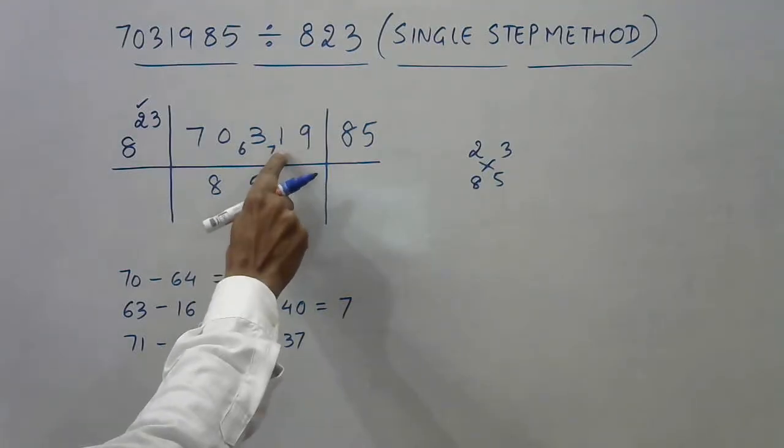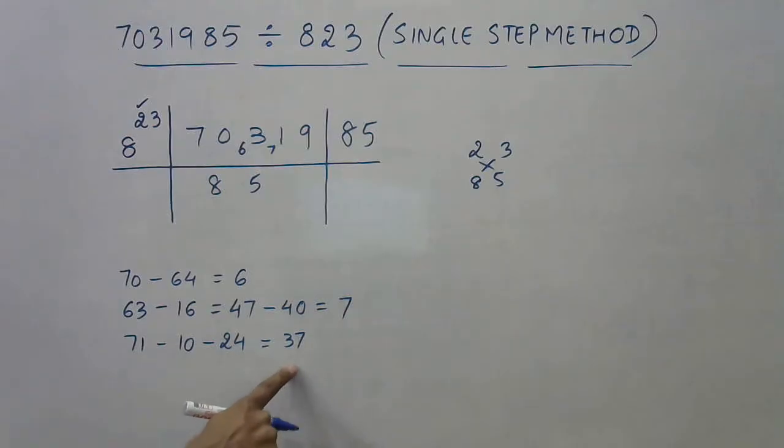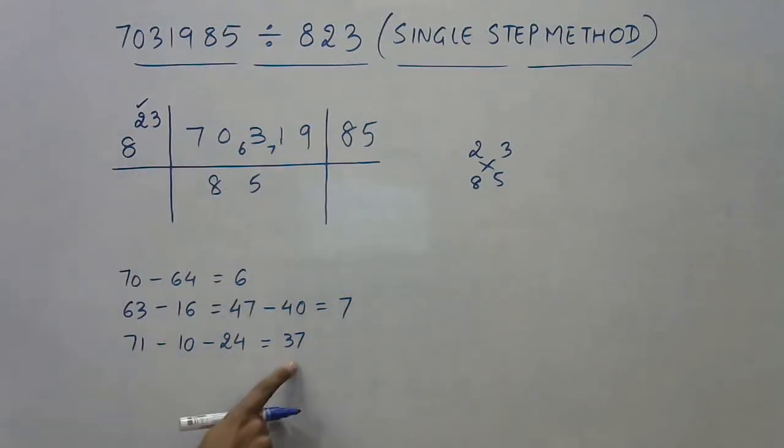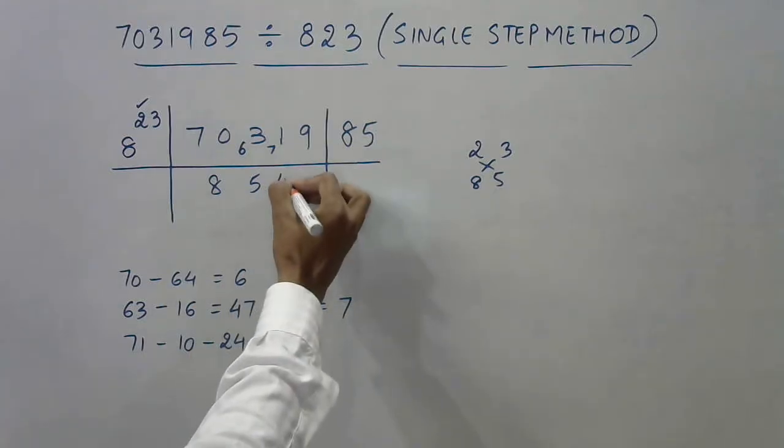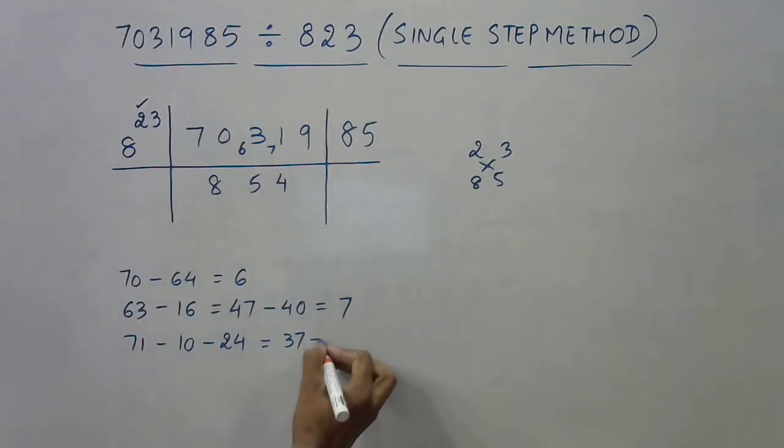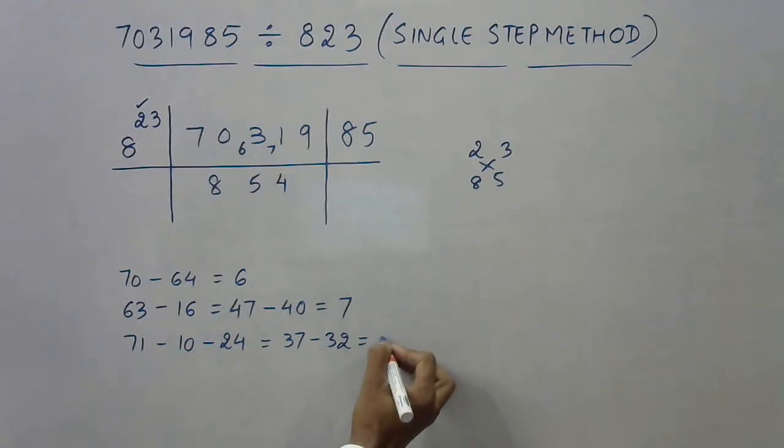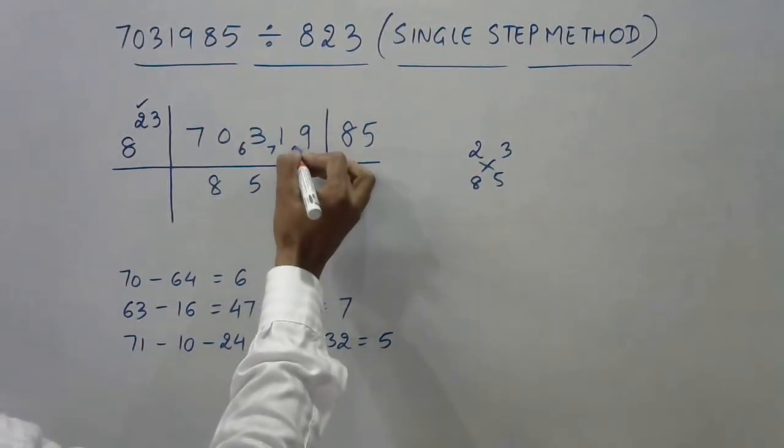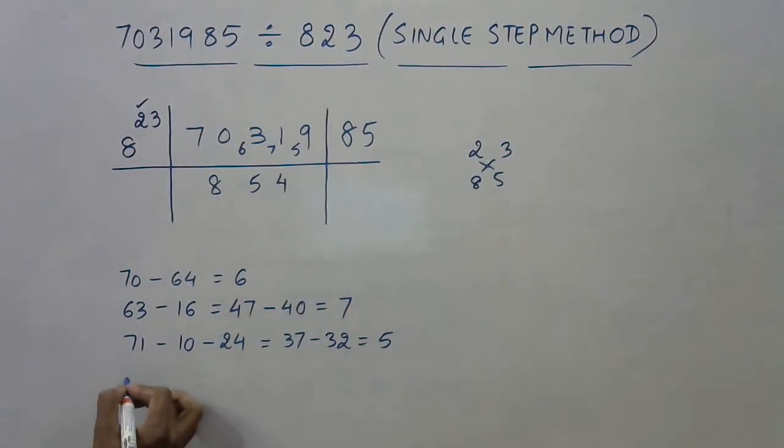71 minus 34 gives me 37 as the new dividend. In place of 71, I have to consider 37. Now 8 times 4 is 32, so I write 4 here as the quotient digit. 8 times 4 is 32, which is subtracted, giving me the new remainder digit as 5. Due to this 5, this 9 becomes 59, and now 59 is the new dividend.